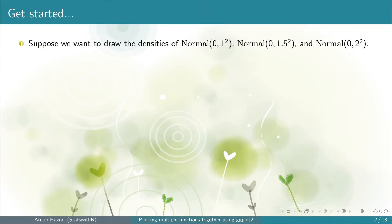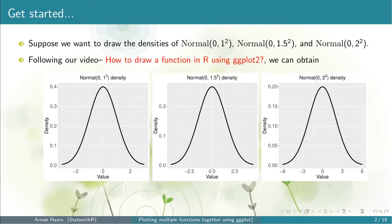We illustrate our full procedure by drawing three normal density functions together. We assume all of them have the same mean of 0 and different standard deviations: 1, 1.5, and 2 respectively. By repeating what we have learnt in the video for a simple function, we can draw these three density functions separately. Note that while all these functions appear to have similar shape, they have different x-axis ranges based on the three sigma limits.